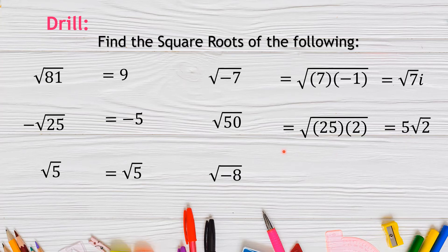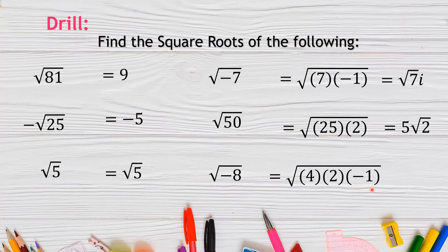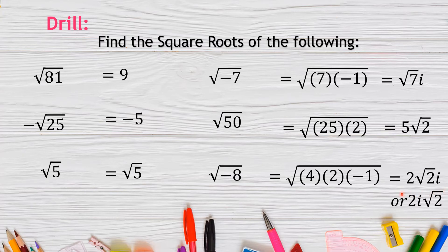For √(−8), we factor out −8 as 4 × 2 × (−1). We extract the square root of 4, which is 2, and the square root of −1 is i. Therefore, the answer is 2i√2.